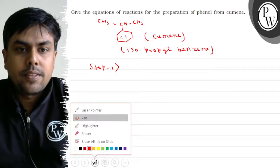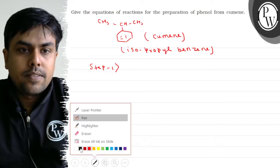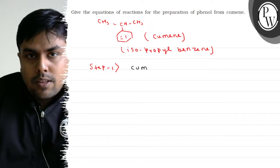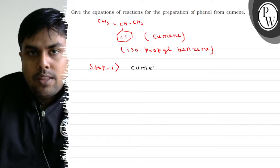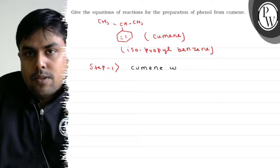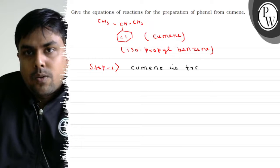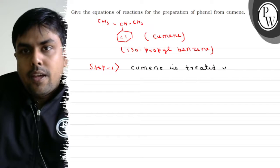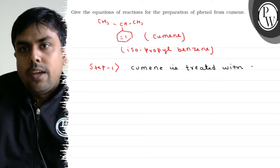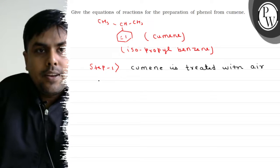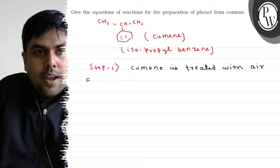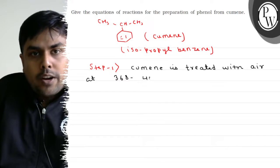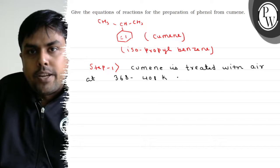In Step 1, cumene is treated with air at a temperature of 368 to 408 Kelvin.